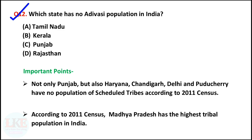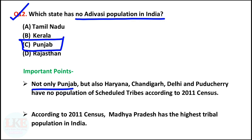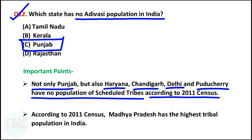Question number 12: which state has no Adivasi or tribal population in India? Right answer option C: Punjab. Not only Punjab but also Haryana, Chandigarh, Delhi and Puducherry have no population of scheduled tribes according to the 2011 census. According to the 2011 census, Madhya Pradesh has the highest tribal population in India.